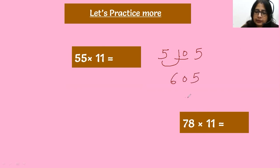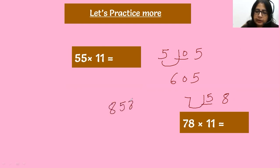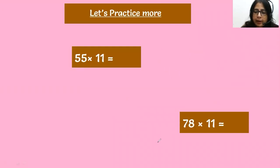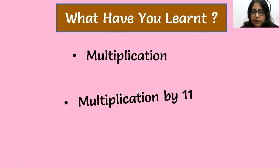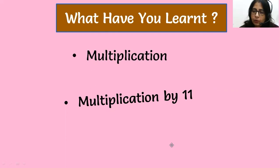For 78 into 11: seven, space, eight. Seven plus eight is fifteen — write fifteen and carry forward the one. Seven plus one is eight. So the answer is 8, 5, 8. I hope you all are enjoying this magic multiplication. What have you learned today — multiplication by 11, a magic multiplication. I hope you all have enjoyed it. Thank you!